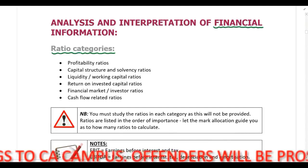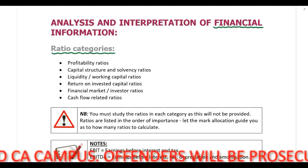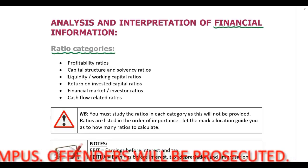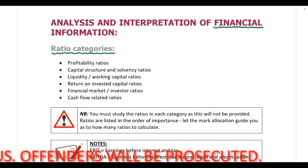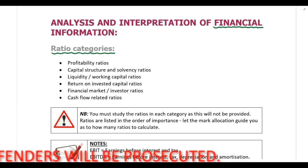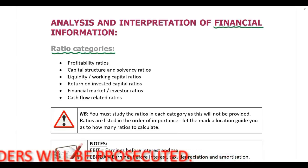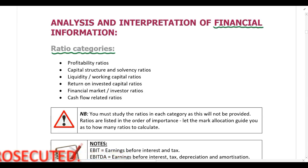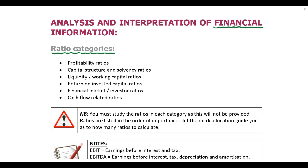First, we look at profitability ratios. Then we look at capital structure and solvency ratios. We then move on to liquidity or working capital ratios. We look at return on invested capital ratios, financial market or investor ratios, and finally, cash flow related ratios. Over the next couple of pages, all of these different ratio categories are included, as well as all of the ratios that fall within these categories.